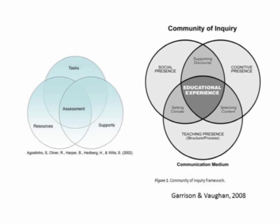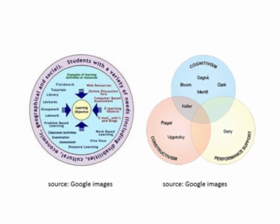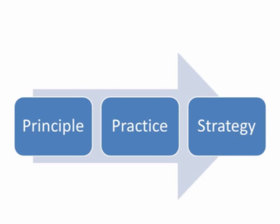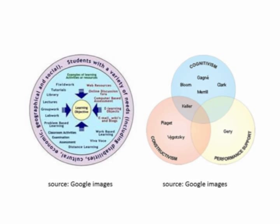Here are a couple of models that shift the focus. One says you need to construct the teaching and learning model out of a set of tasks, a set of resources, a set of supports, and how they need to overlap in the assessment. The second is a community of inquiry model. Here we get into models that are more concerned with teaching and learning principles rather than strategies. If one is serious about where we're going with blended learning, you have to start with what principles you are aspiring to, then determine practices consistent with those principles, and then determine what strategies support those practices. On the right-hand side, this model is about mixing cognitivism, performance support, and constructivism — it's essentially a pedagogic model.